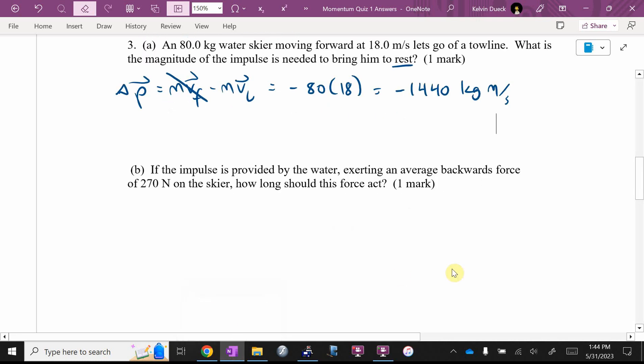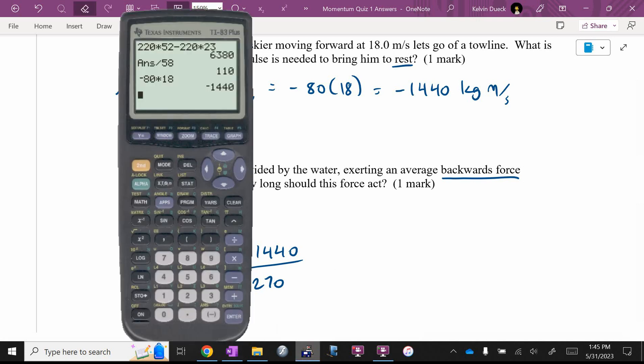If the impulse is provided by the water exerting an average backwards force, how long should this force act? The version of impulse that has force in it is that one. They want me to find T. How would I get the T by itself? It's going to be impulse divided by F. My answer from there divided by... I don't like this, I'm going to get a negative time. But wait a minute, the force is backwards, which means it's technically negative too. You're going to get a negative divided by a negative, which is positive. So I went divided by negative 270 and I got 5.33 seconds.